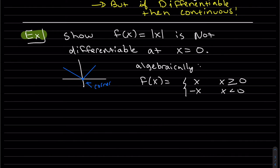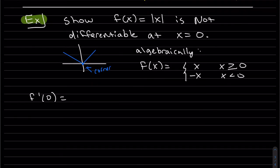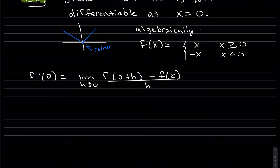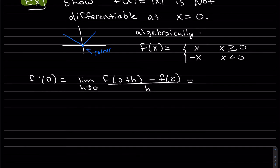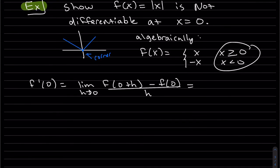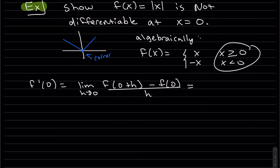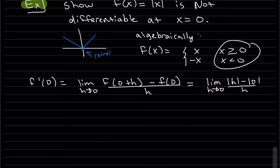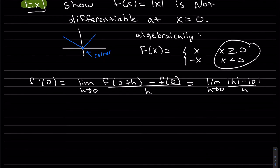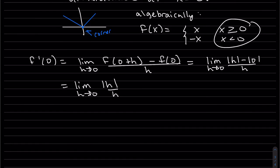The derivative at x equals zero uses the limit definition: f(0+h) = f(h) = |h|, minus f(0). Because absolute value is a piecewise function, and we want to know this limit as h approaches zero, we need to compute the left-hand and right-hand limits separately.